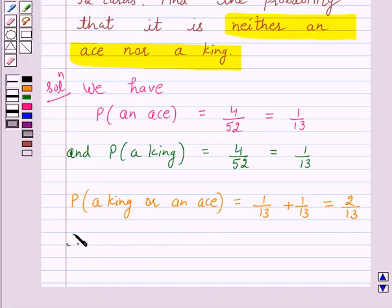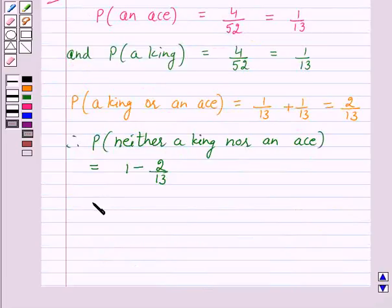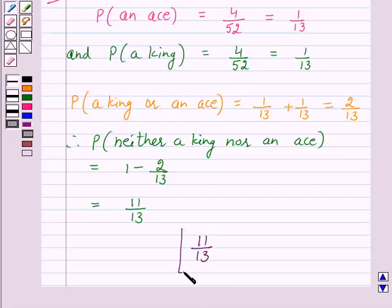Therefore, the probability that the card drawn at random is neither a king nor an ace is equal to 1 minus 2 over 13, which is again equal to 13 minus 2 over 13, which is equal to 11 over 13.